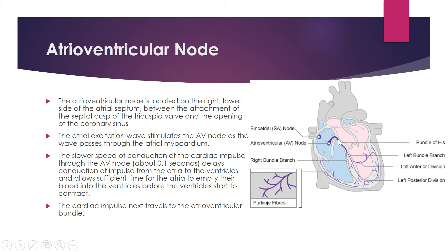The AV node is located on the right lower side of the atrial septum — the wall between the right and left atria — specifically between the attachment of the septal cusp of the tricuspid valve and the opening of the coronary sinus. The coronary sinus is the large dilated vein that opens into the right atrium.